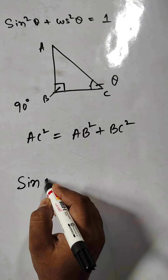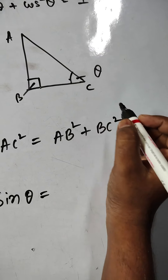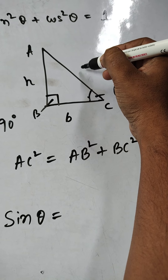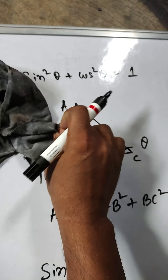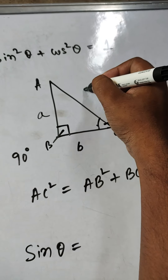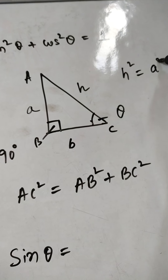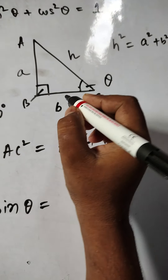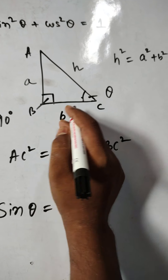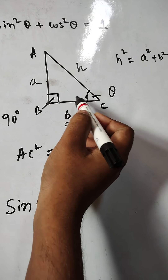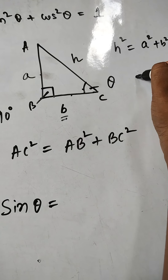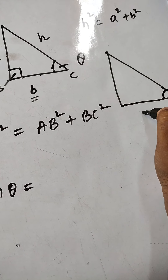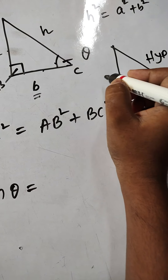Now, to avoid confusion: if this is theta, this side is called adjacent, this is hypotenuse, and this is opposite. We use these terms because if you see from this side, base and height get interchanged, so we use opposite and adjacent relative to theta instead.